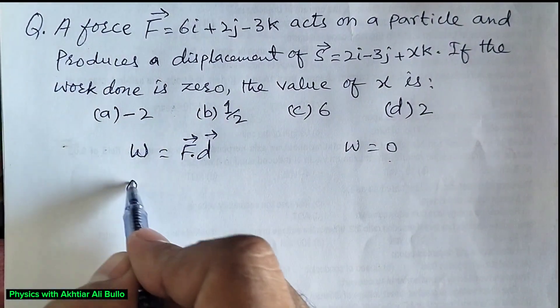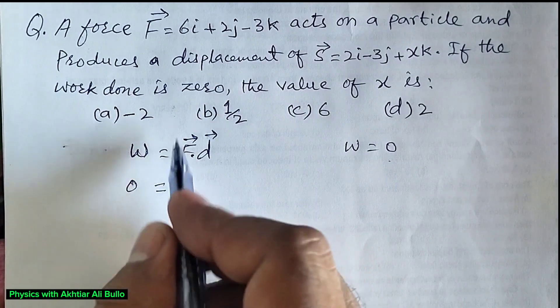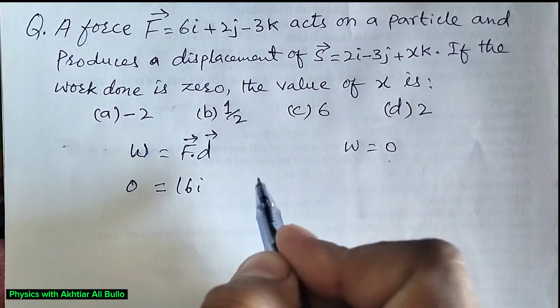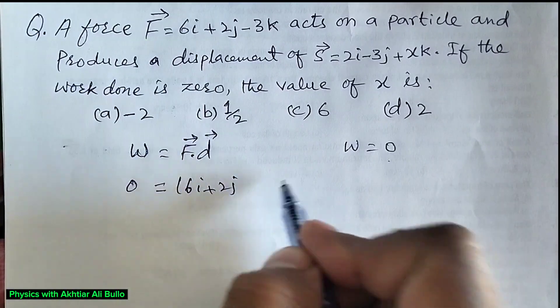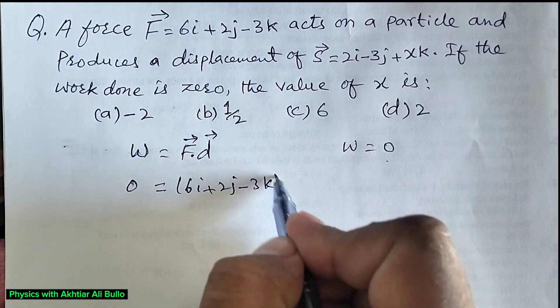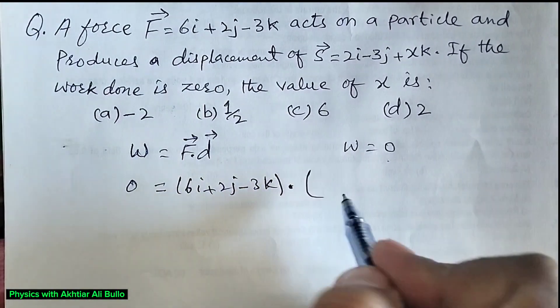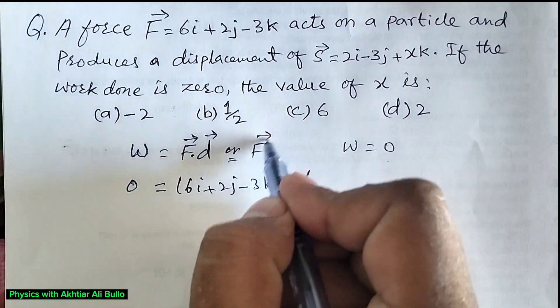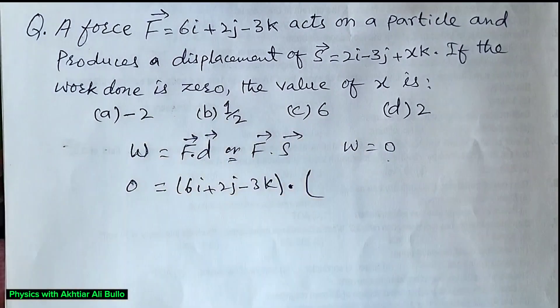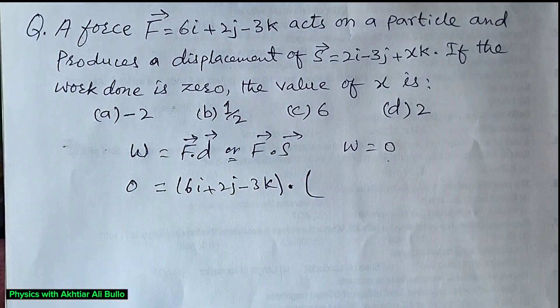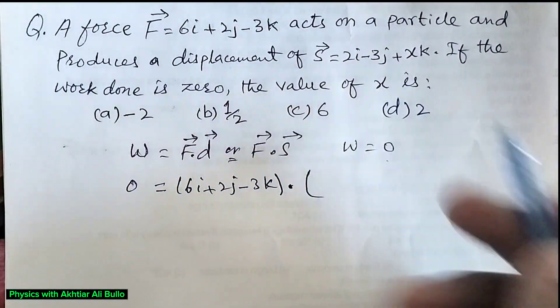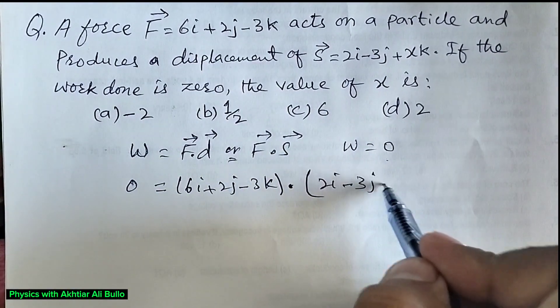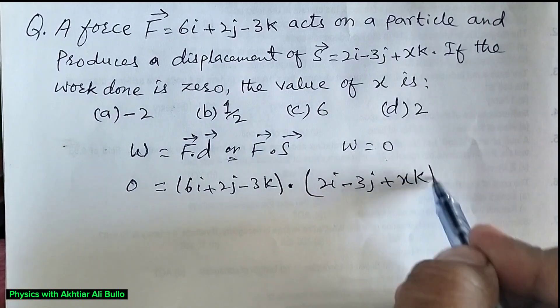So 0 will be equal to, as force is obtained in terms of unit vectors, 6I plus 2J minus 3K dot displacement, or we can also write it as F dot S vector. So displacement is obtained as 2I minus 3J plus XK.